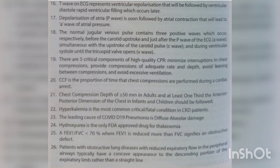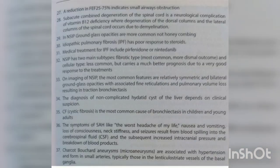An FEV1/FVC ratio less than 70%, where FEV1 is reduced more than FVC, signifies an obstructive defect. Patients with obstructive lung disease with reduced expiratory flow in the peripheral airways typically have a concave appearance to the descending portion of the expiratory limb. A reduction in FEF 25-75% indicates small airway obstruction.